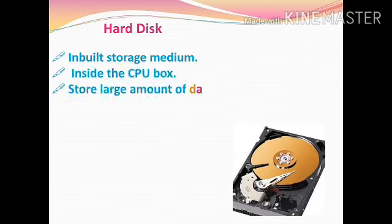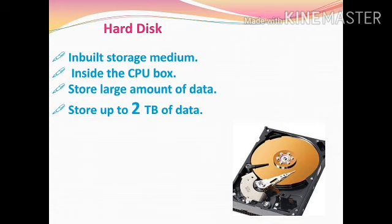The first secondary memory we are going to discuss is hard disk. The hard disk is an inbuilt storage medium — whenever we purchase a CPU, the hard disk is inbuilt on it. It is fixed inside the CPU and has large capacity on which we can store a large amount of data. All the programs and data of a computer are stored in it. When we start a computer, the hard disk starts reading the information necessary to start the computer.